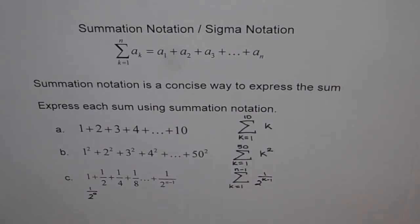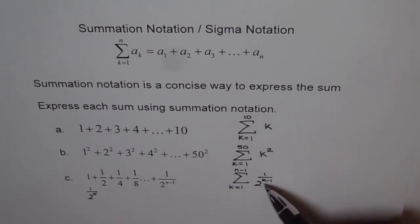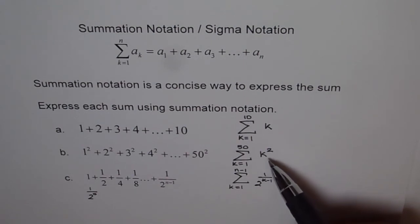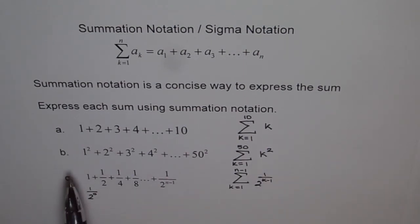And the last term is n minus 1. That is how we can represent this, all these terms of a sequence added together in summation notation. Go through this video once again. Try to understand how we are writing in summation notation.